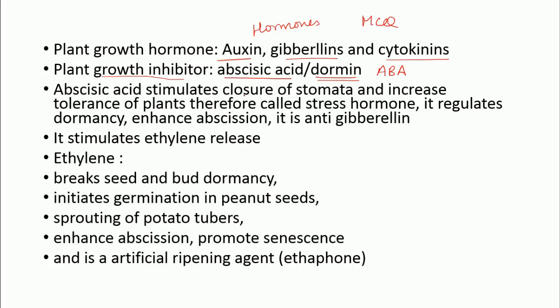Abscisic acid regulates dormancy, enhances abscission, and is anti-gibberellin. This is also asked — which hormone is anti-gibberellin or opposite to gibberellin? The answer is abscisic acid. Abscisic acid also helps in ethylene hormone release. So which hormone helps in the release of ethylene? Abscisic acid.